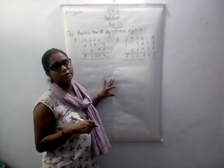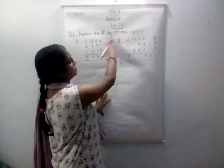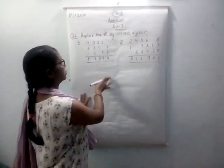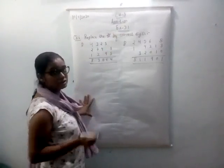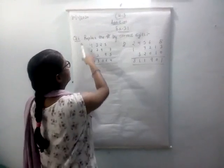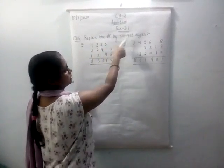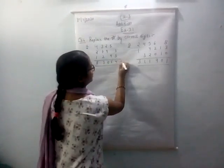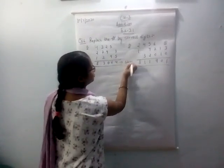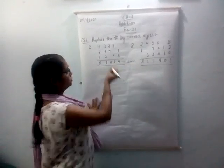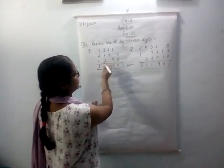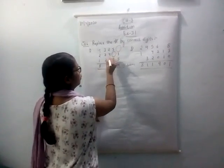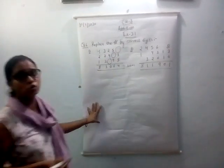I am going to show you how to replace the correct digit for the stars given in a sum addition. Exercise 3.1, question number 6, page number 38. So replace the star by the correct digit. The sum must be given to you — only then you can replace the star or blank space which is given to you.